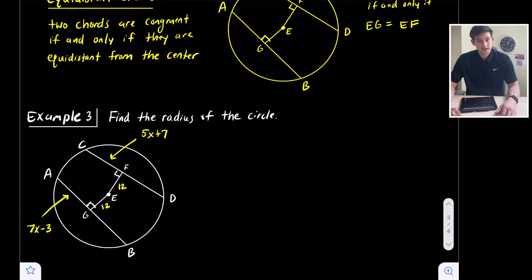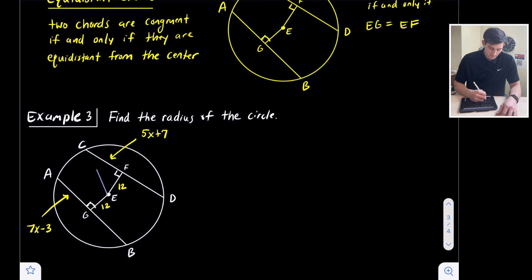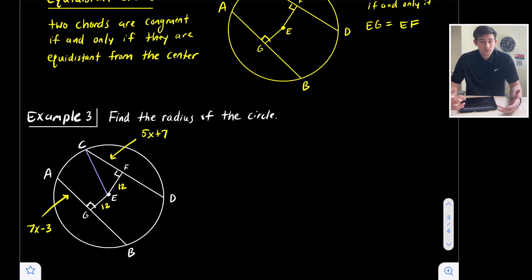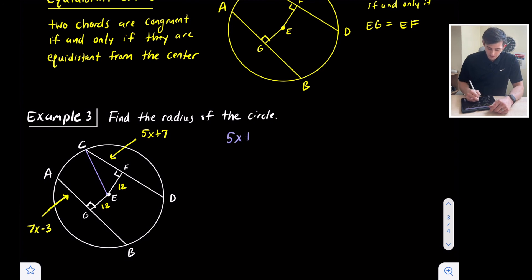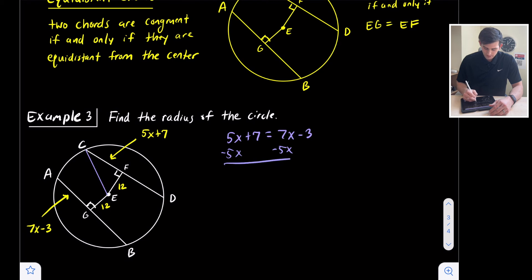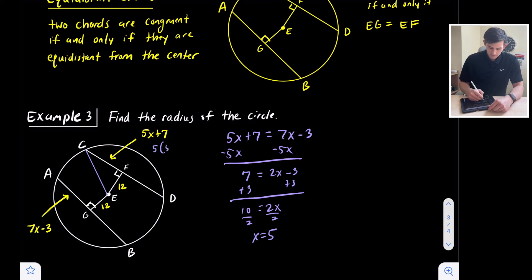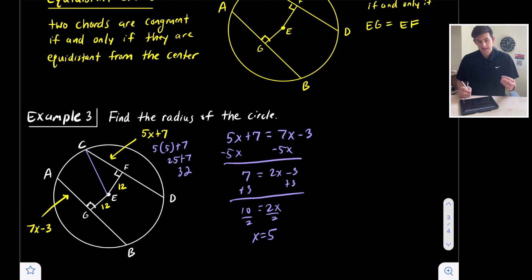We can use this theorem to find the radius of a circle. We're given measurements and want to find the radius — the distance from the center to the edge. We've created a right triangle and will use the Pythagorean theorem to solve for the hypotenuse, which is the radius. Since both distances equal 12, the chords are congruent. Setting the chord expressions equal: 5x + 7 = 7x − 3. Subtracting 5x: 7 = 2x − 3. Adding 3: 10 = 2x, so x = 5. Plugging in: 5(5) + 7 = 32, so CD and AB are both 32.